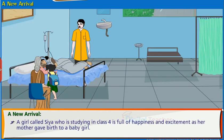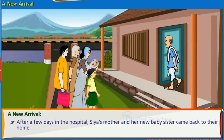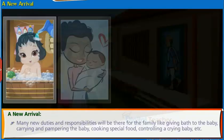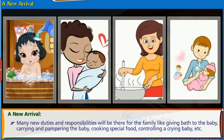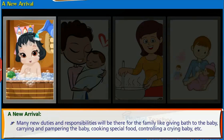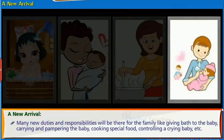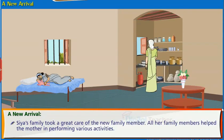A girl called Sia, who is studying in class 4, is full of happiness and excitement as her mother gave birth to a baby girl. After a few days in the hospital, Sia's mother and her new baby sister came back home. With the arrival of a new member, many changes occurred in their home. Many new duties and responsibilities arose for the family, like giving a bath to the baby, carrying and pampering the baby, cooking special food, controlling a crying baby, etc. Sia's family took great care of the new family member and all members helped the mother in performing various activities.